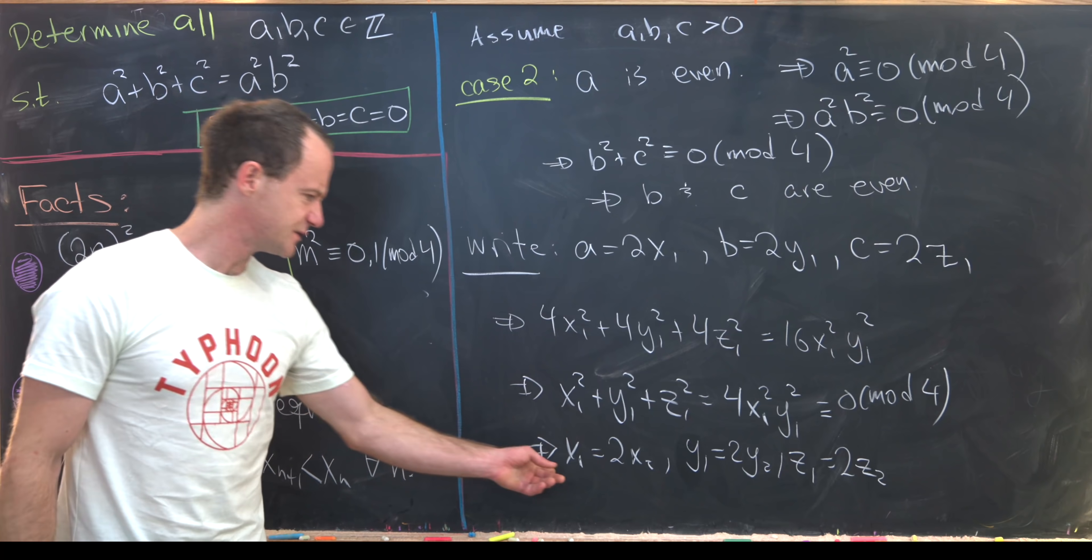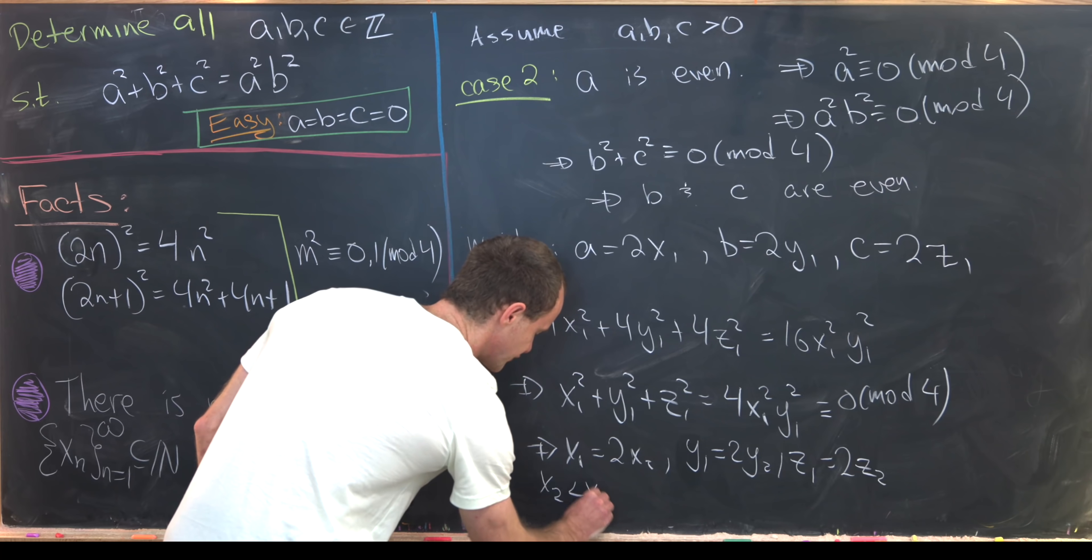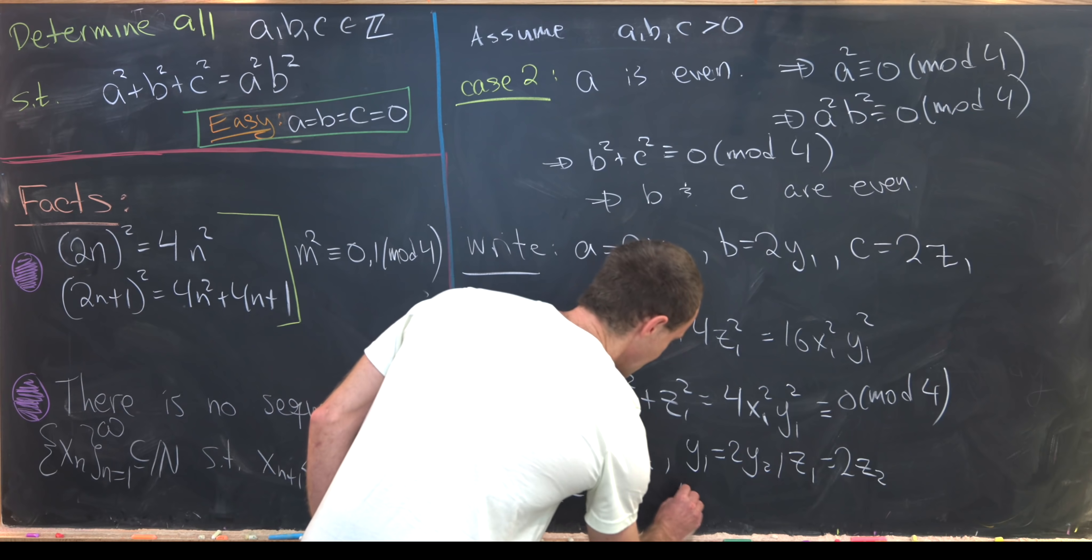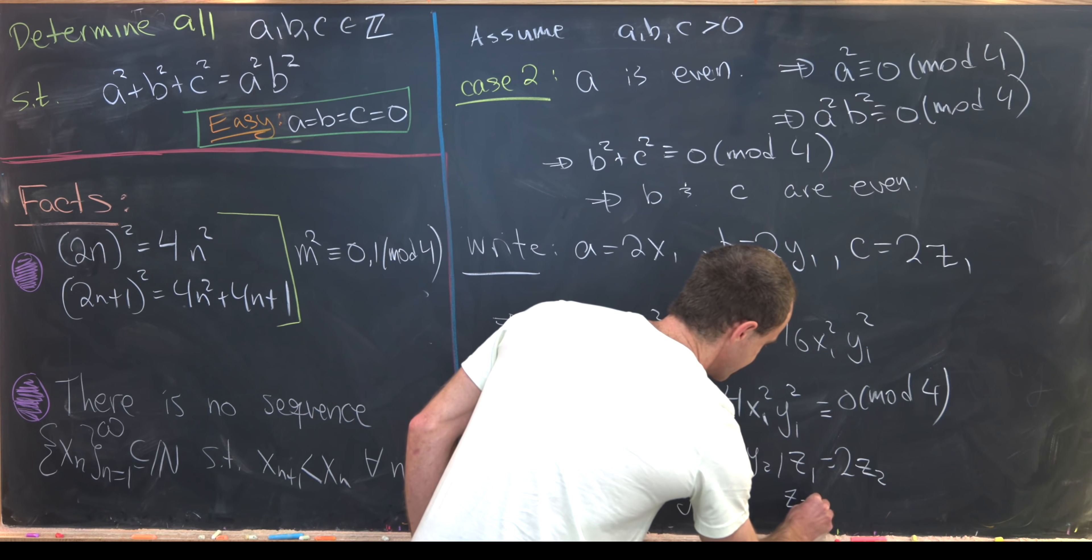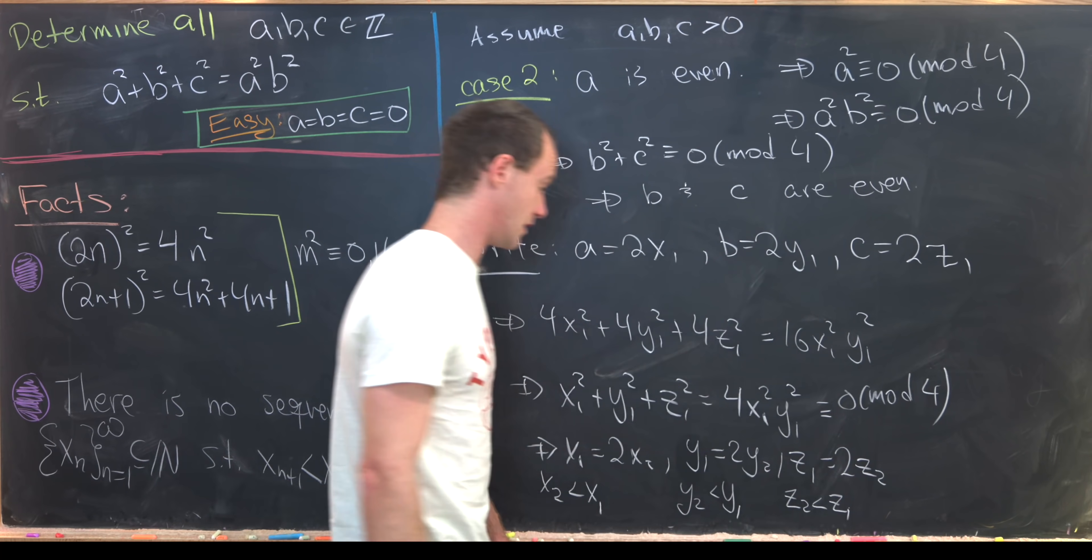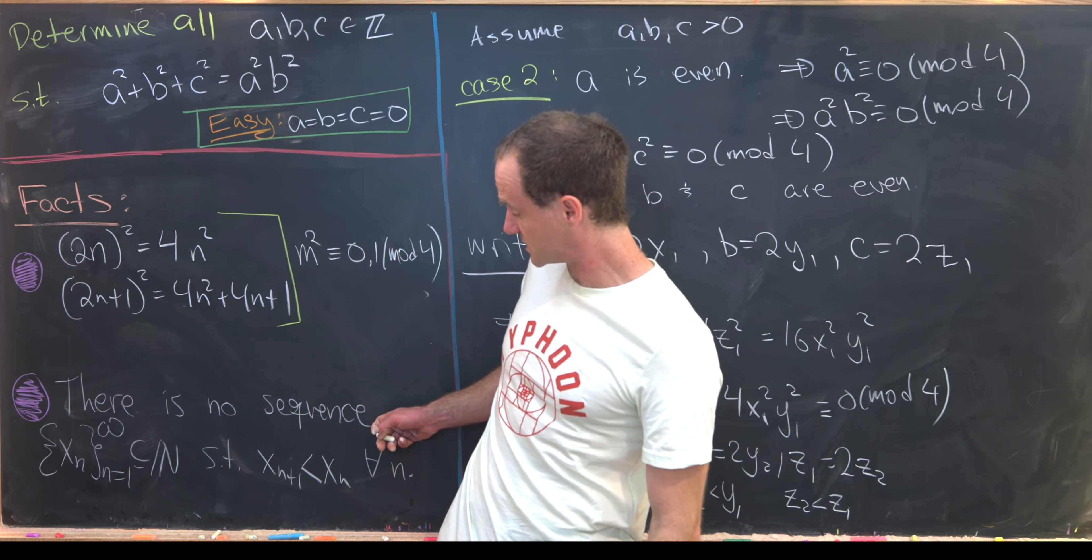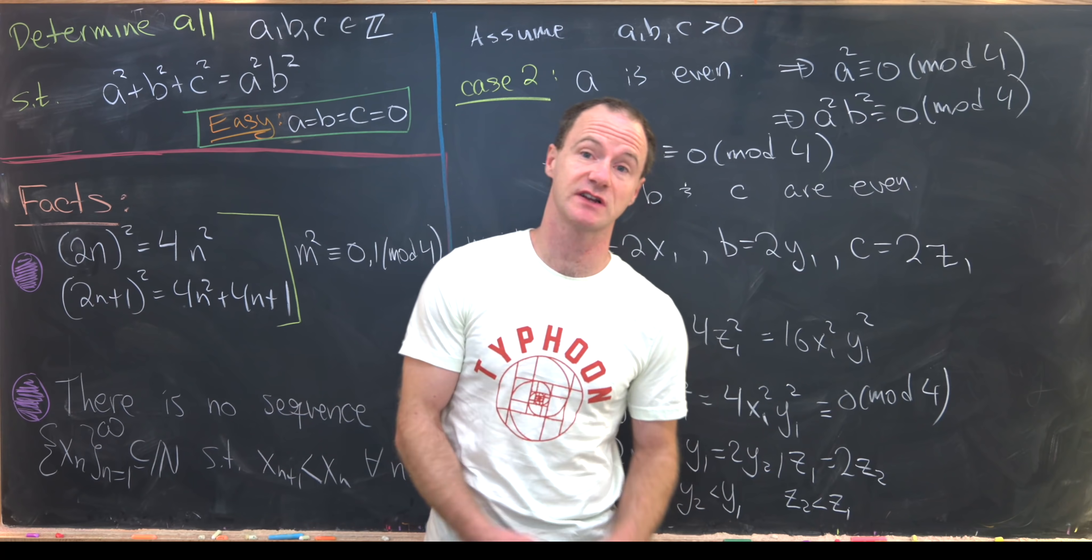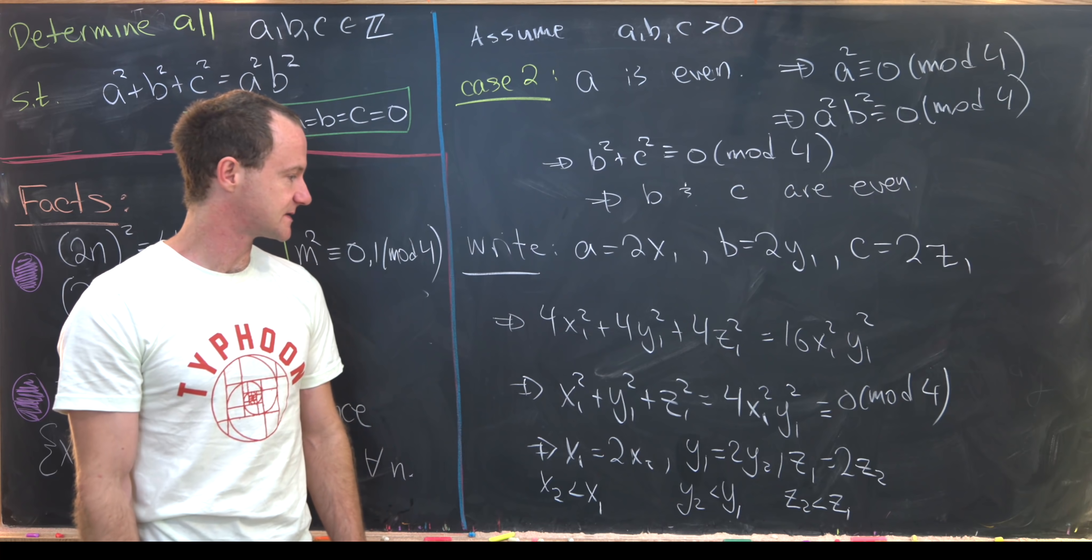And now notice, since we've got x₁ = 2x₂, that means x₂ is strictly less than x₁. And similarly, y₂ is strictly less than y₁ and z₂ is strictly less than z₁. So it looks like we're flirting with creating a sequence of natural numbers that is strictly decreasing, which is impossible.